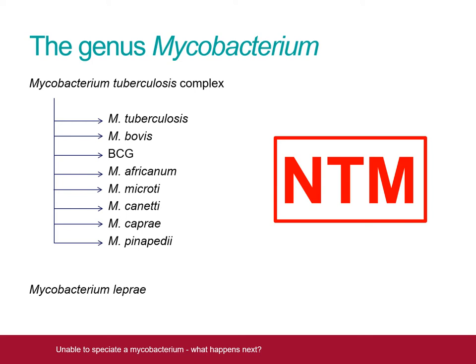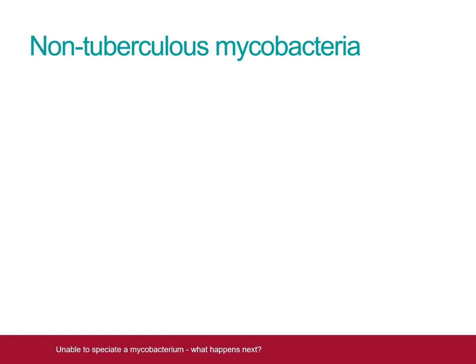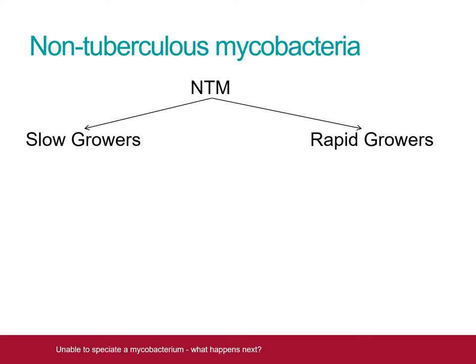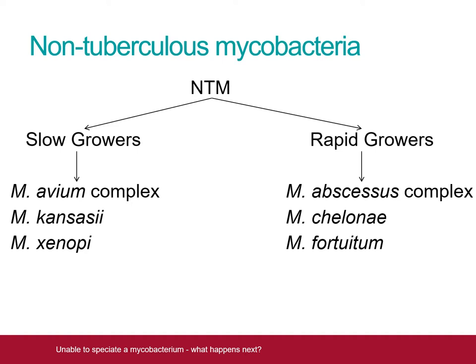The third and largest category is that of the non-tuberculous mycobacteria, sometimes referred to as NTMs. There are several different ways of classifying NTMs, but they can generally be subdivided by their rate of growth. The slow growers take more than 7 days to grow, whilst the rapid growers take fewer than 7 days. Both categories contain species which can cause human disease. Some of the most common are shown here, but there are more than 150 NTM species in total.